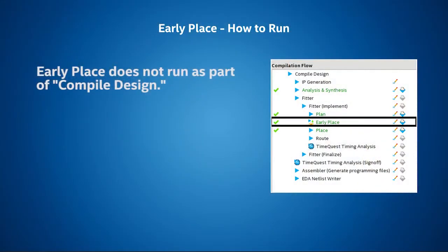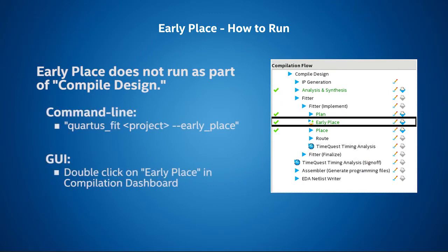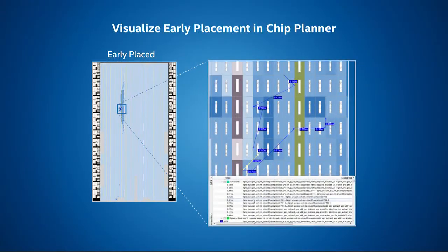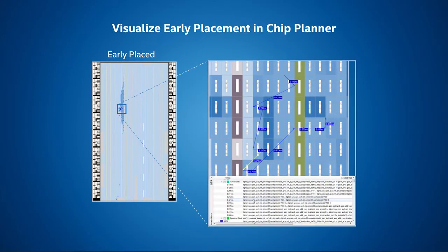Running early place is simple. For example, you can run on the command line or click on the button in the compilation dashboard. After you have run early place, you can take a look at the results in chip planner. This is a powerful visualization tool that shows the floor plan. The timing delays are annotated on this floor plan, making it much easier to fix potential timing violations.